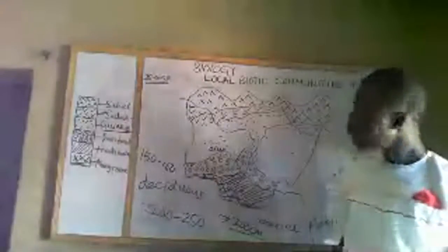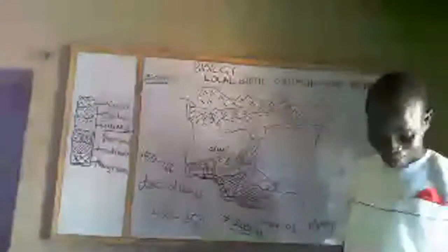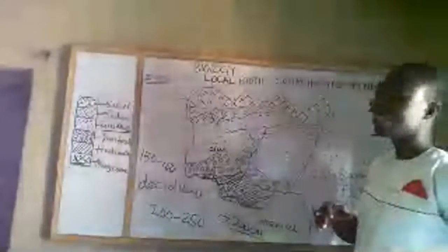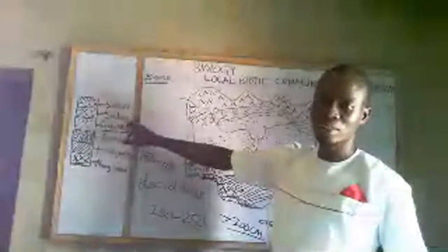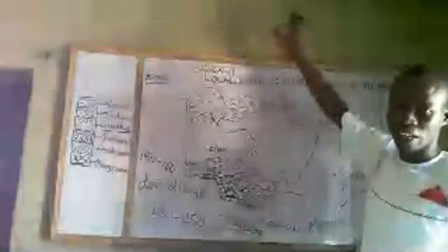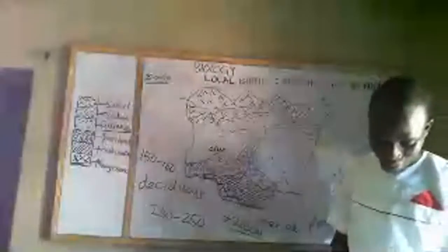Now we move to Sahel savannah. In Sahel savannah, we have scanty trees and scanty grasses. The grasses are not as tall as those of Guinea and Sudan savannah. Sahel savannah is found in the extreme north, in states like Katsina, Sokoto, Borno, Yobe, and part of Adamawa. This is where we can find Sahel savannah in Nigeria.